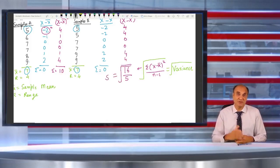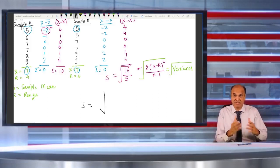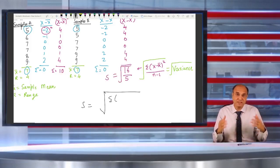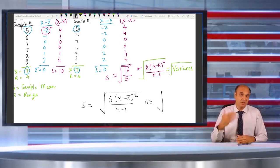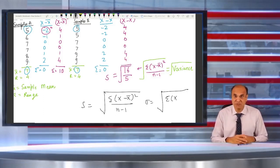And if you have got the data of whole population, then you don't have to divide it by n minus 1. Then you can always divide it by n. So for the standard deviation of the population, if you have got the information of whole population,